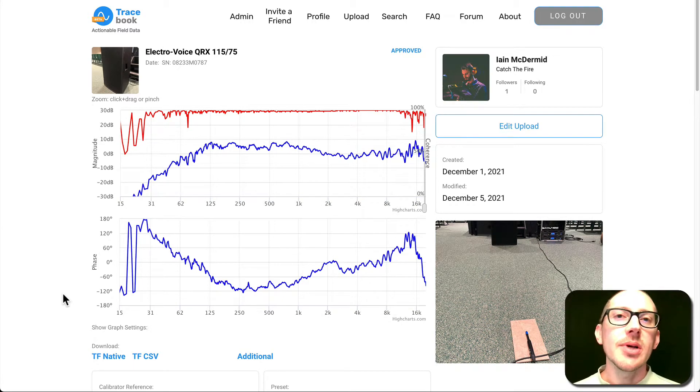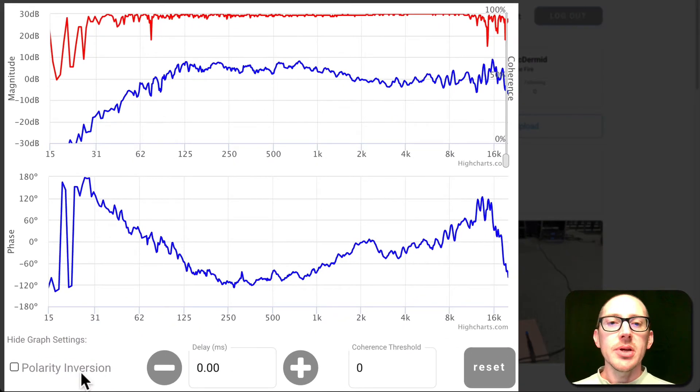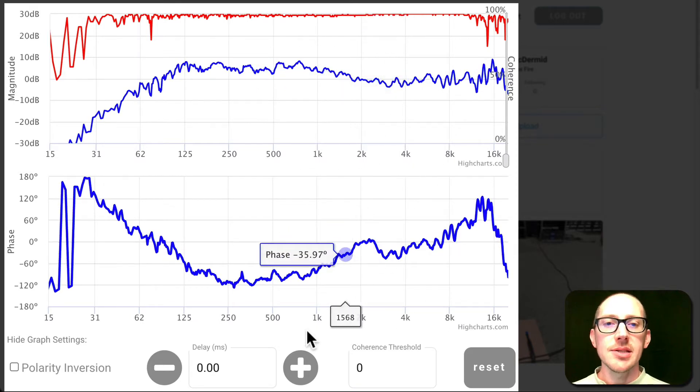Hey, I want to show you a couple of cool updates that I just published to Tracebook. You can now add delay, polarity inversion, and coherence blinking to the magnitude and phase graphs.